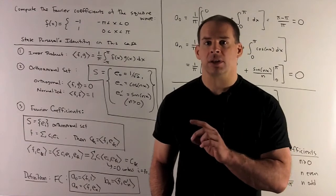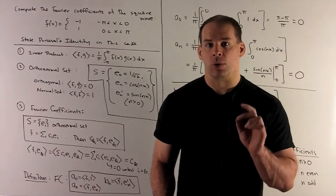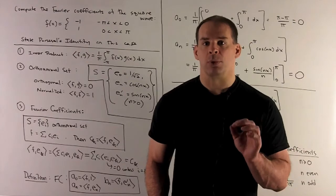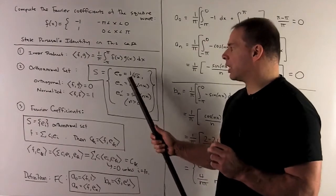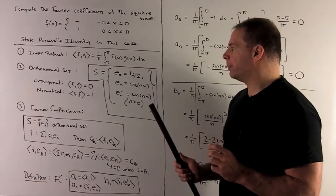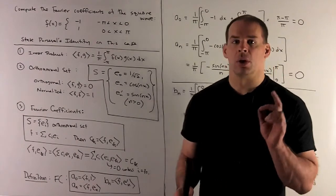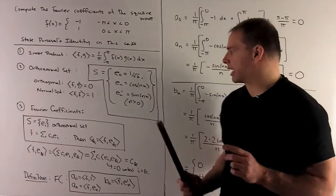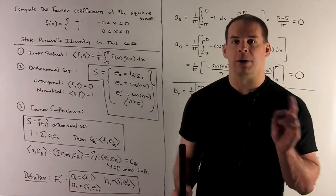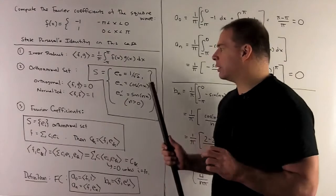With an inner product, we next want to find an orthonormal set. The orthonormal set we're going to use here is going to be given as e0 equals 1 over square root of 2, e sub n equals cosine of nx, e sub n prime equals sine of nx. And then we're going to have n bigger than zero. So this is going to be an infinite set.